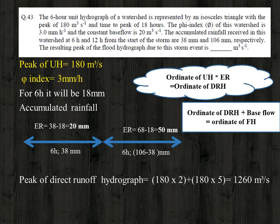The peak of the direct runoff hydrograph equals the peak of the unit hydrograph multiplied by effective rainfall in centimeters. For a unit hydrograph, effective rainfall is expressed in centimeters: 20 mm = 2 cm and 50 mm = 5 cm. So: peak DRH = 180 × 2 + 180 × 5 = 360 + 900 = 1260 cubic meter per second.